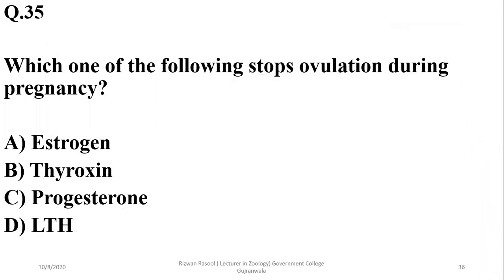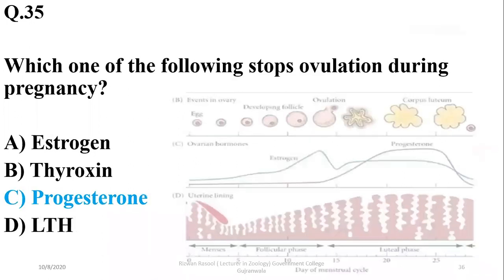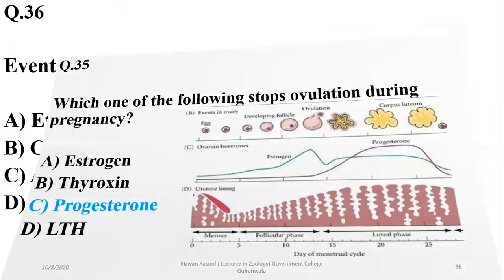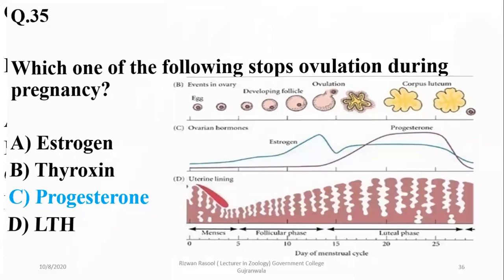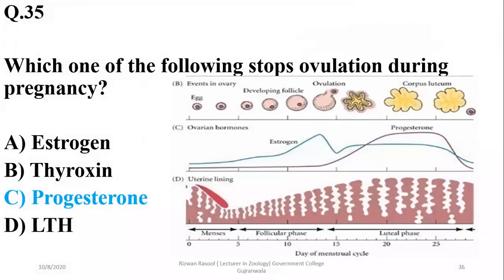Number thirty-five: which of the following stops ovulation during pregnancy? Ovulation is inhibited due to the release of progesterone during pregnancy, so the right option will be charlie. Progesterone can increase and inhibit the release of LH as well as FSH because it exerts negative feedback.